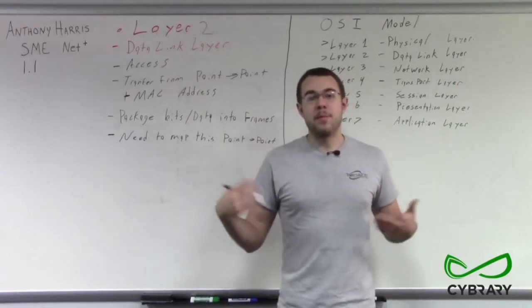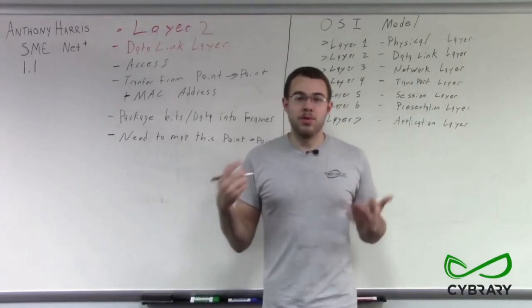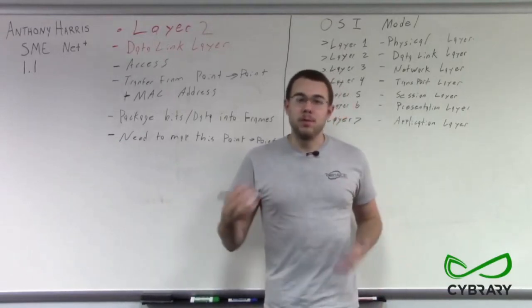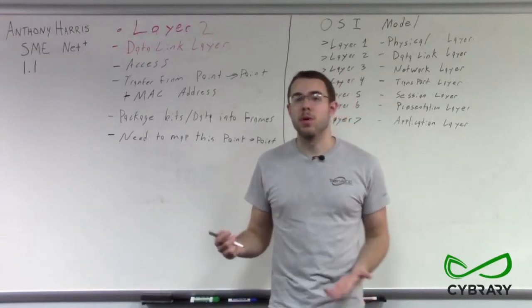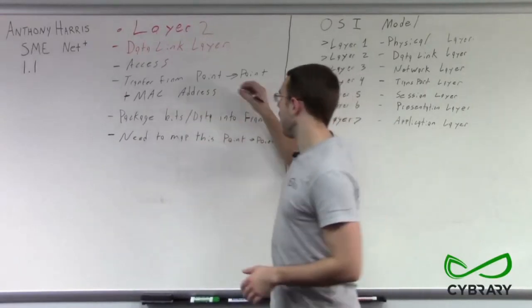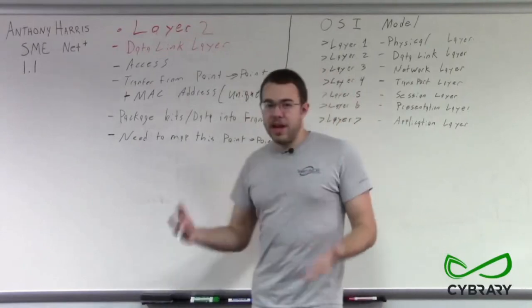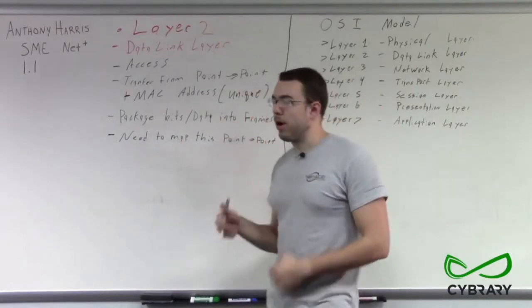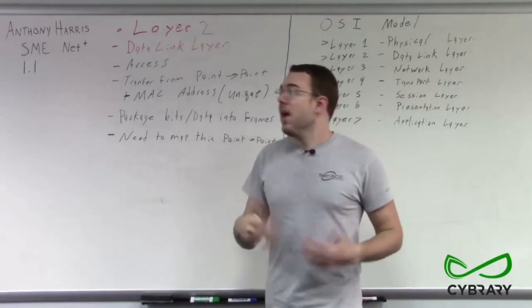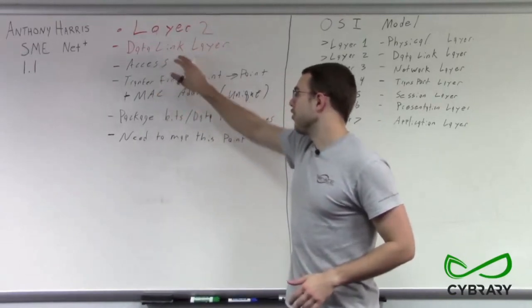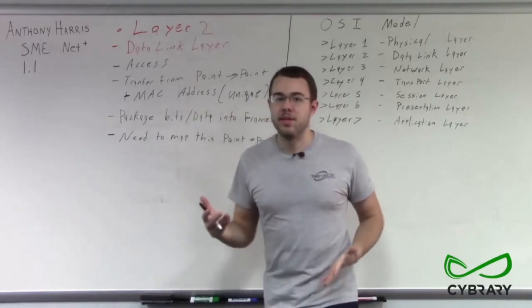If we had an environment where hypothetically two computers had the same MAC address, we would end up with a lot of different problems with connectivity for those two devices on our network. So these MAC addresses are unique. When data transfer gets to the point where it's sending to a specific MAC address, that's our layer two — that's the point in our transfer where we have layer two connectivity.